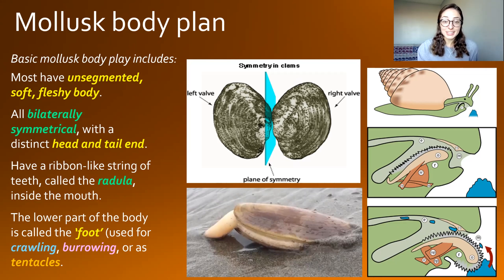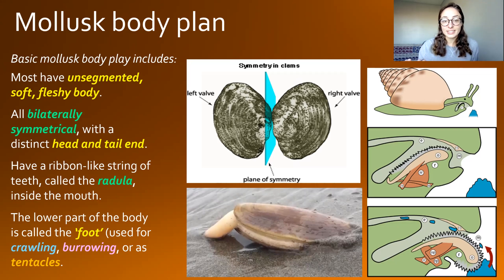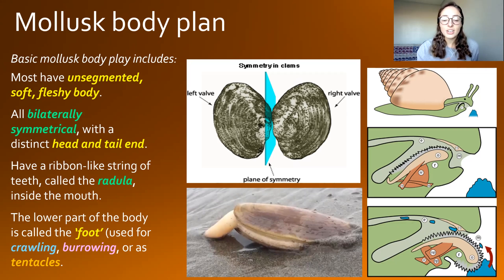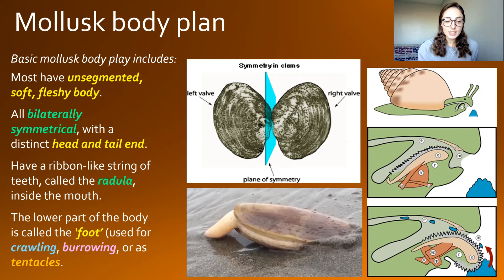Speaking more about those soft and squishy parts, mollusks have what's called a foot, which is pretty much what we just call their body. Their foot is used either for crawling, as in gastropods — the green part of the snail there is pretty much its foot besides the head and mouth. It can also be used for burrowing, for example in clams, as we can see in the bottom middle picture with a clam's foot sticking out, helping it burrow into the sand. And it can also be used for tentacles, for example in cephalopods, which we'll talk about more in that video.